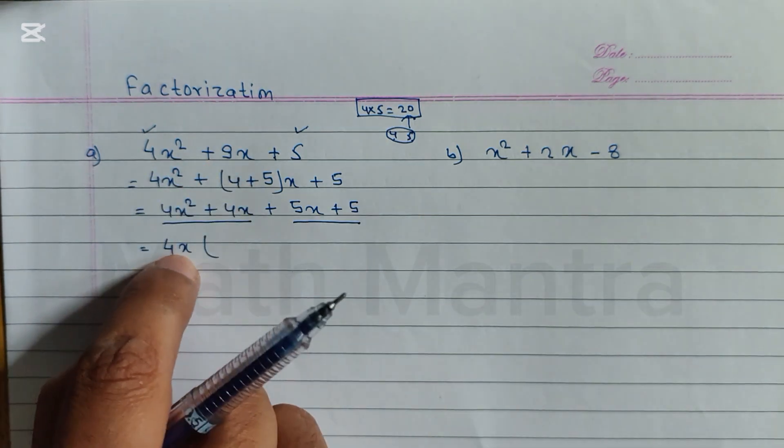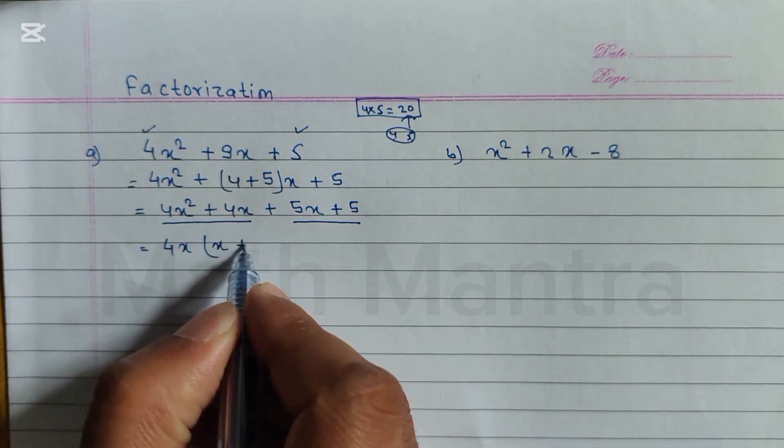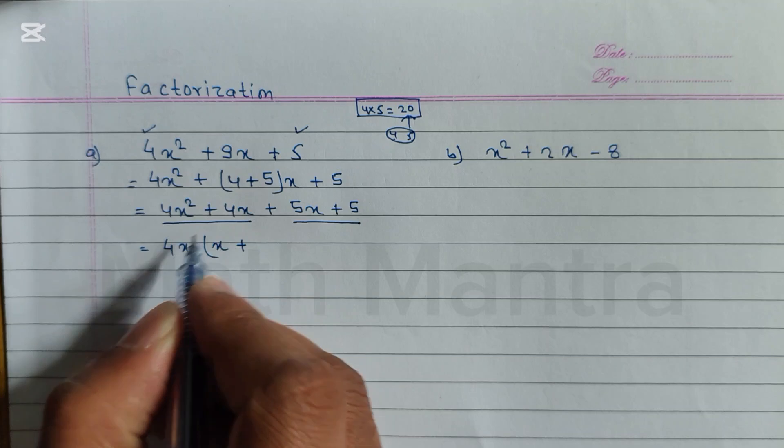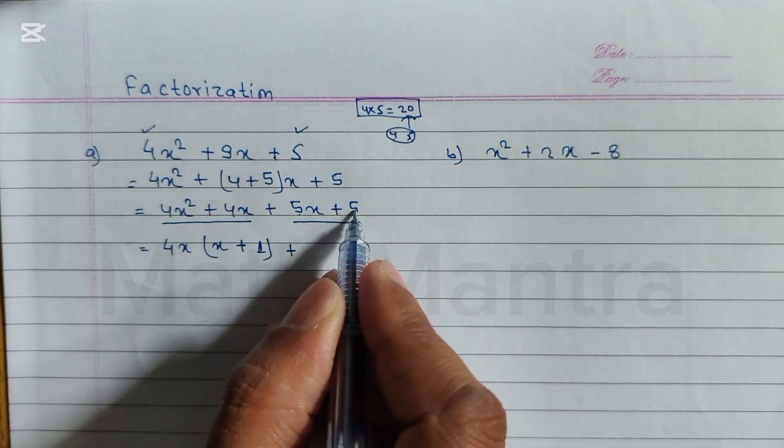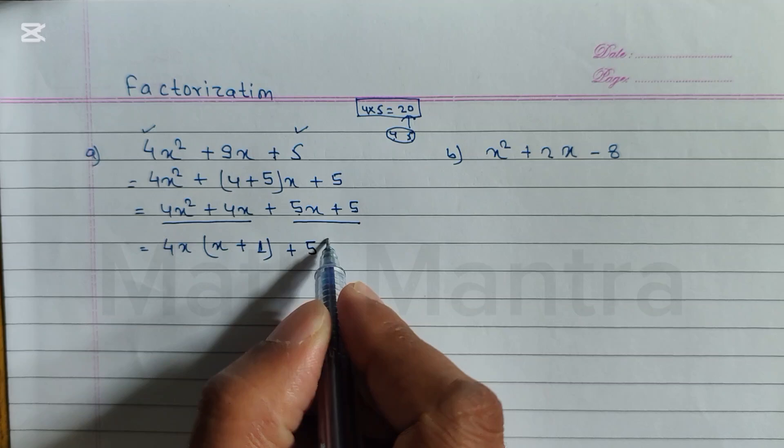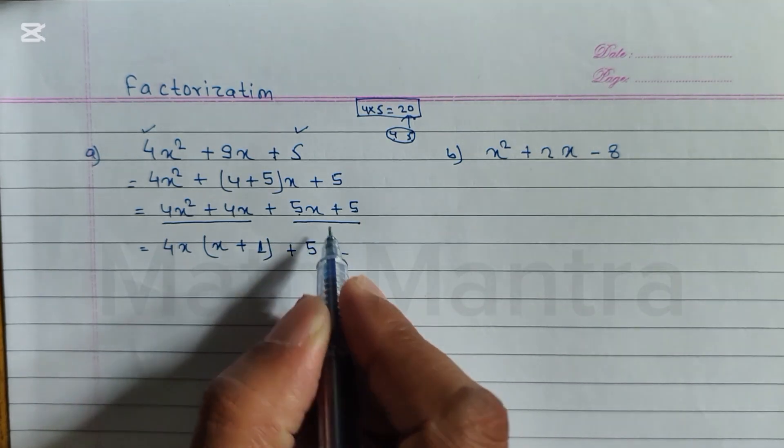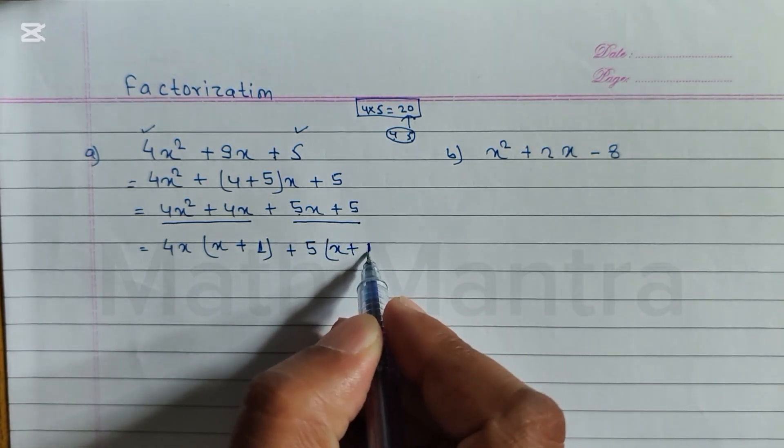Write plus. This 4 is also common, x is also common, nothing is remaining so we have to write here 1. Plus 5, here also 5, so we can take 5 as a common. What is remaining here is x, so write x. Plus this 5 is already common, nothing is remaining so we have to write here 1.